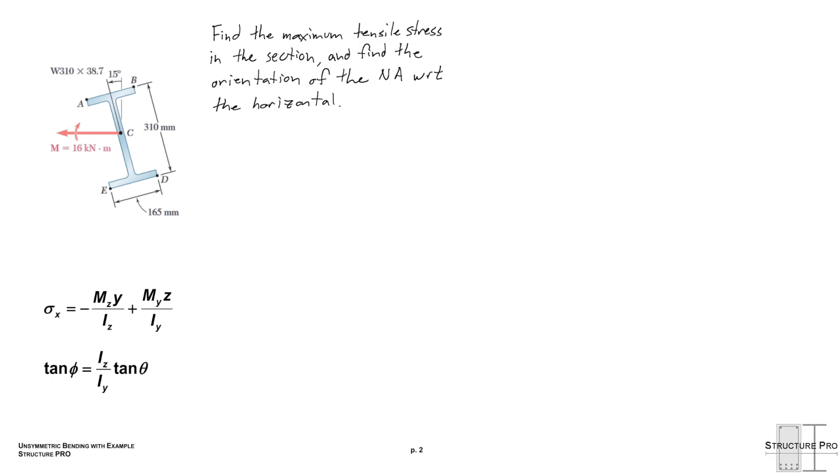So in this example, we're asked to find the maximum tensile stress in the section and find the orientation of the neutral axis with respect to the horizontal. So we can see we have this I-section drawn. Now let's go through our steps that we're going to need to employ in order to solve really any unsymmetric bending problem.